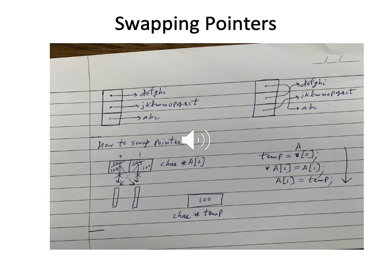After sorting, the pointers have changed and shifted. The first pointer will point to ABC, the second pointer will point to DEFGHI, and the third pointer will point to JKLMNOPQRST. Importantly, we are not moving the lines at all — the lines stay where they are. The only thing we are moving is the pointers. Moving pointers is much more efficient than moving the lines themselves because lines are of various lengths and copying them would take longer.